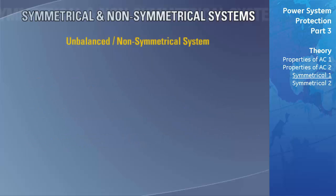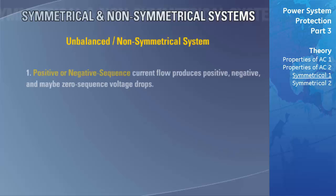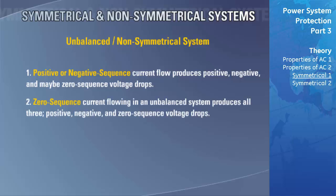This is not true for any unbalanced or non-symmetrical system. Positive or negative sequence current flowing in an unbalanced system produces positive, negative, and possibly zero sequence voltage drops. Zero-sequence current flowing in an unbalanced system produces all three — positive, negative, and zero sequence voltage drops.